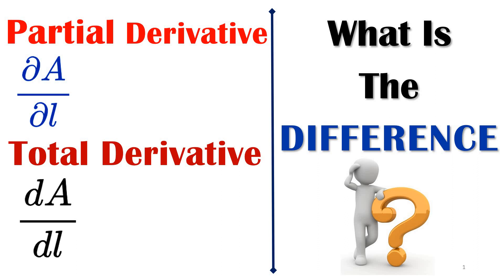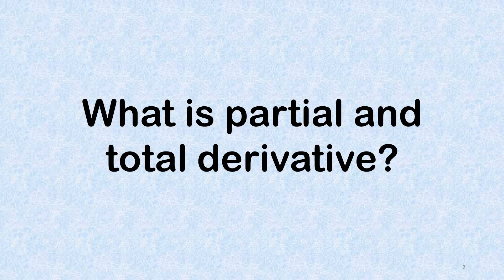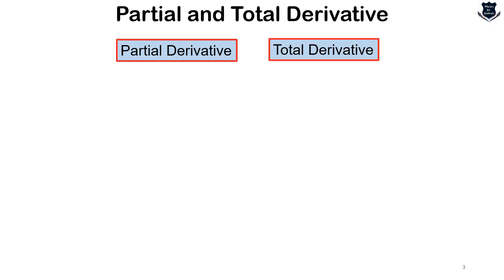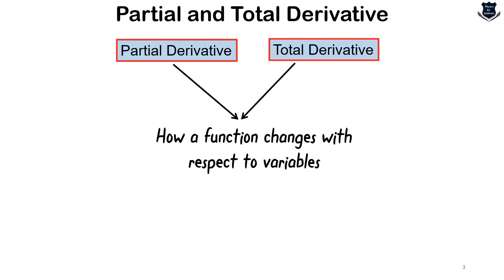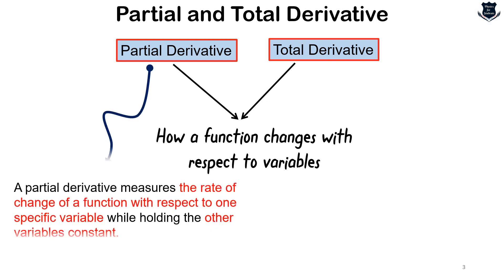My name is Shonak and you are watching this video on my channel Physics for Students. Welcome to this fresh new video on the difference between partial and total derivative. In mathematics, both partial and total derivatives are concepts used to describe how a function changes with respect to its variables. The partial derivative measures the rate of change of a function with respect to one specific variable while holding the other variables constant.